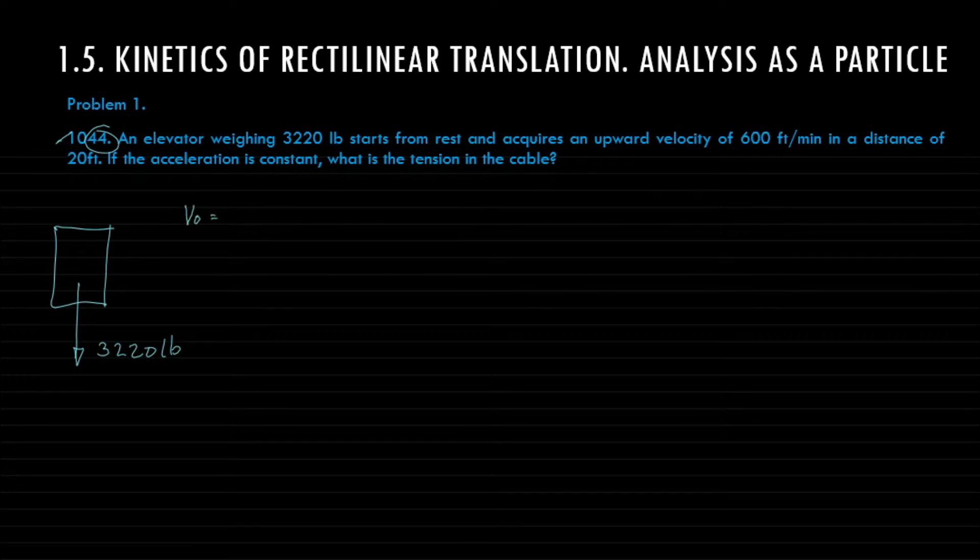It acquires an upward velocity of 600 feet per minute, so upward velocity meaning the direction of motion is upwards, in a distance of 20 feet. So this velocity will be acquired at a distance s equals 20 feet.